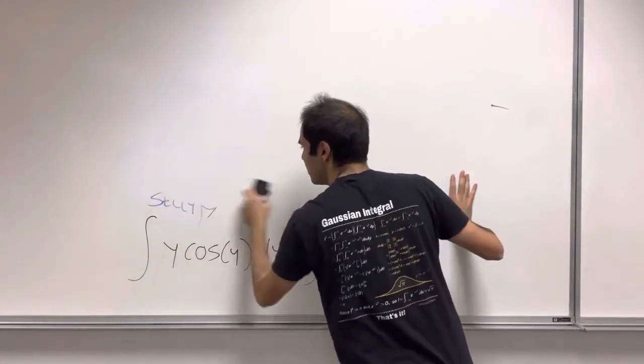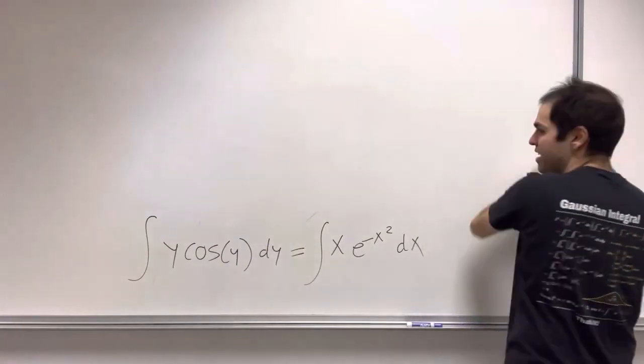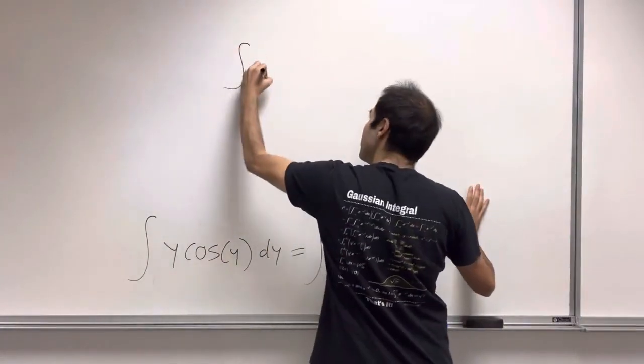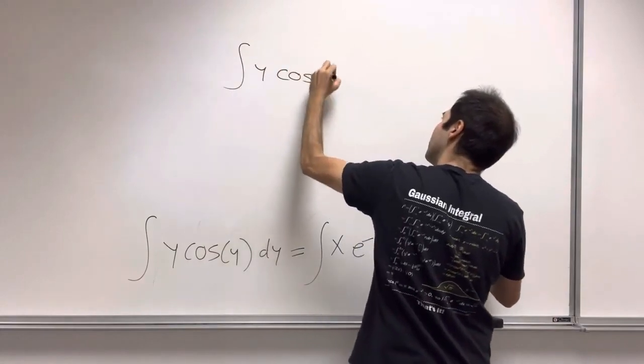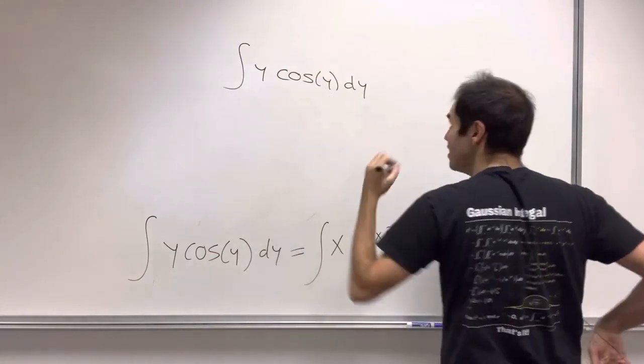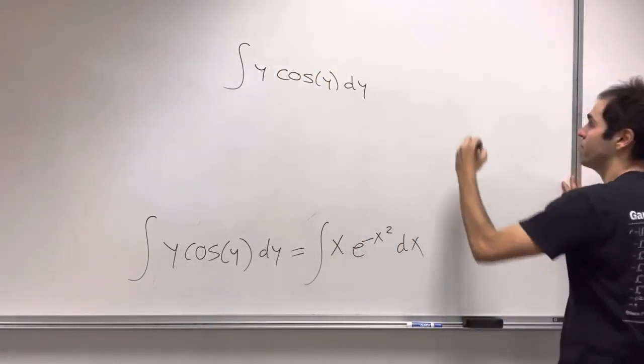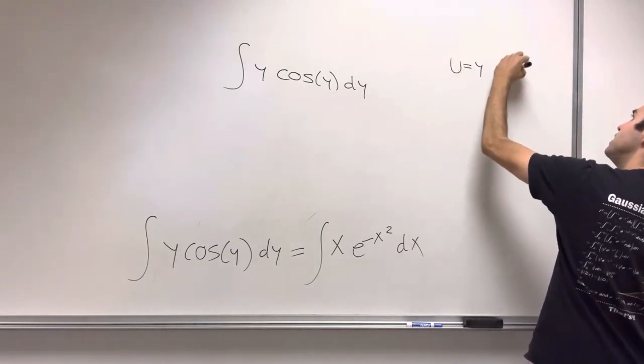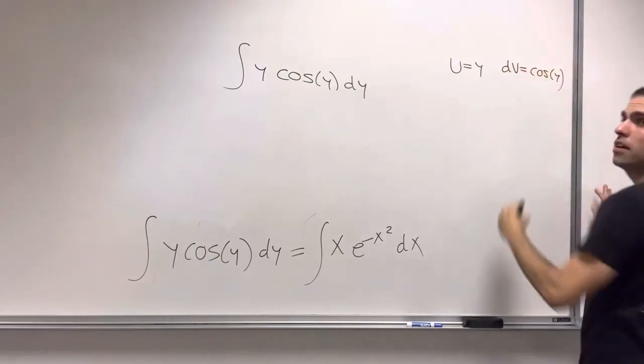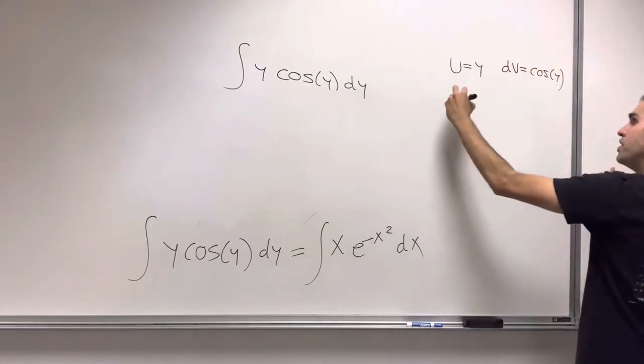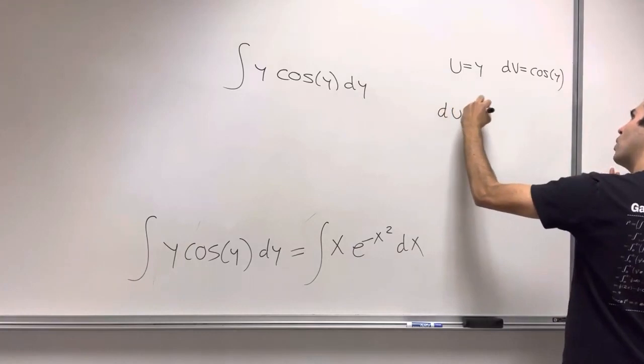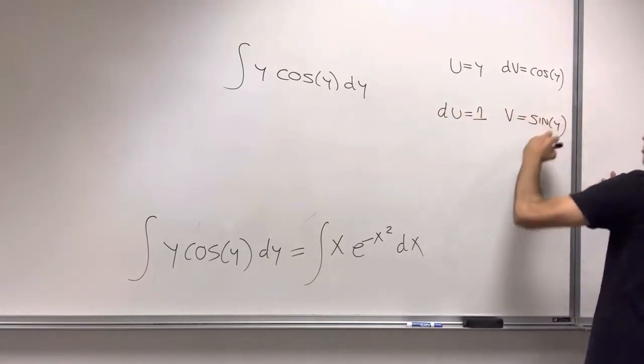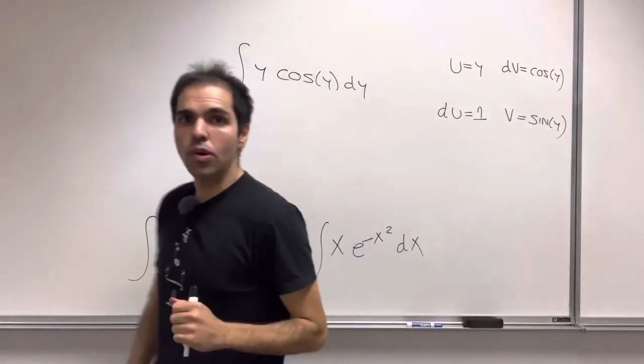And well, let's treat both sides separately. So on the one hand, integral of y cosine of y dy, that's just calls for integration by parts. So u is y, dv is cosine of y, and then du is 1, and then v is sine of y. Because sine prime is cosine,